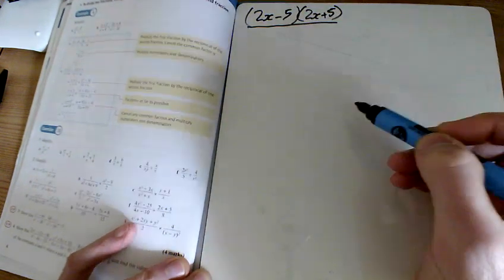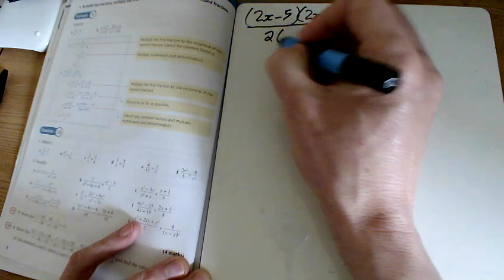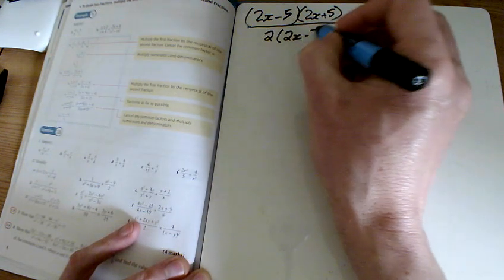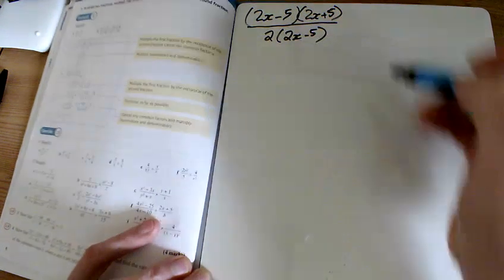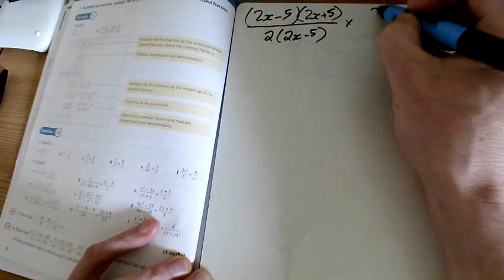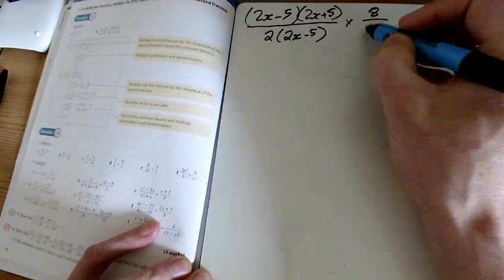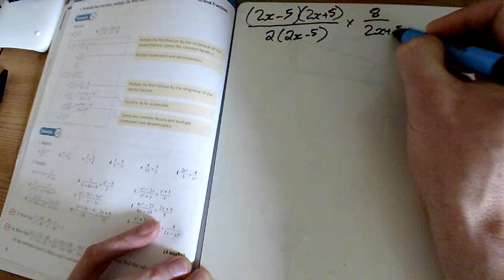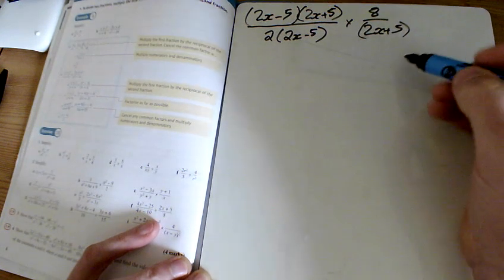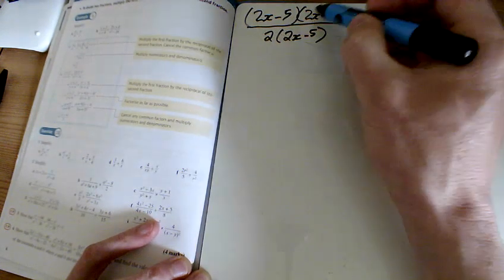Down the bottom there we've got 4 lots of x take away 10, so 2 goes into that. I've got an x minus 5 again. It's a divide, so I'm going to change it to a times and I'm going to flip this upside down. I've got an 8 and a 2x plus 5, so that one cancels with that one.